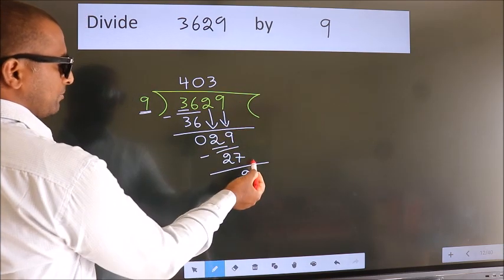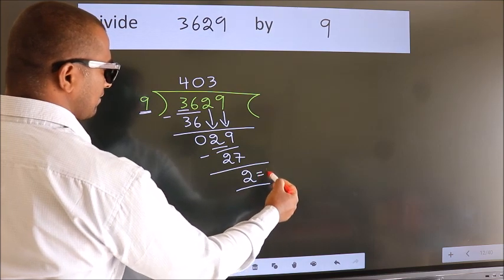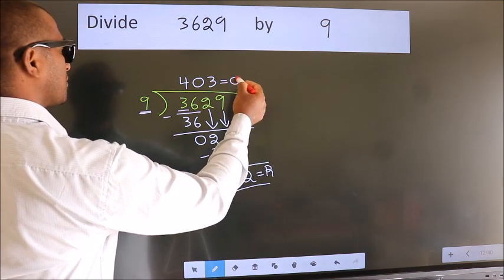No more numbers to bring it down. So we stop here. This is our remainder. This is our quotient.